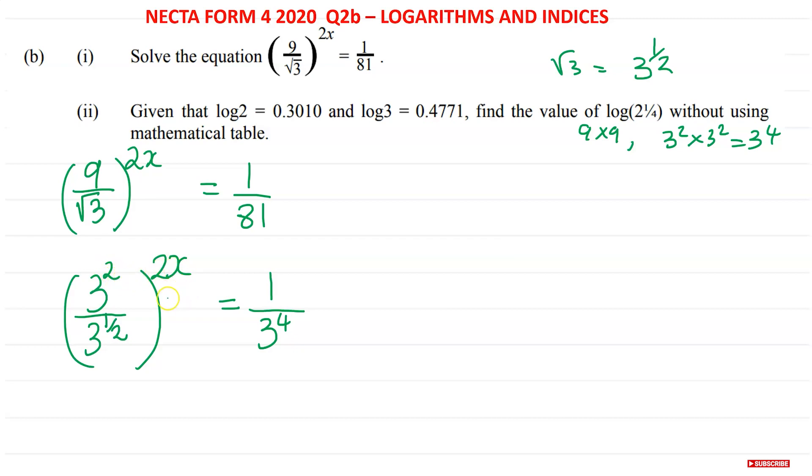We need to multiply the indices to remove this power outside the bracket. So 2 times 2x is 4x, so the numerator becomes 3^(4x), and the denominator 3 to the power half times 2x. The powers need to be multiplied together: half times 2 is 1, so that's going to give you 1x. But we don't write 1x, we just write x.